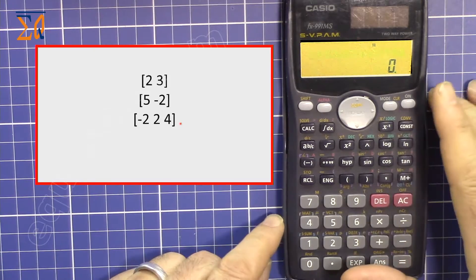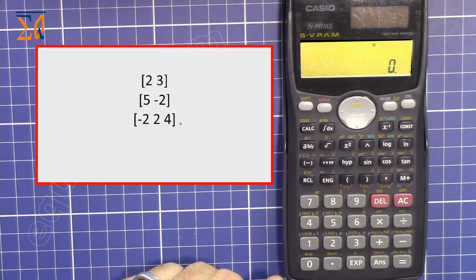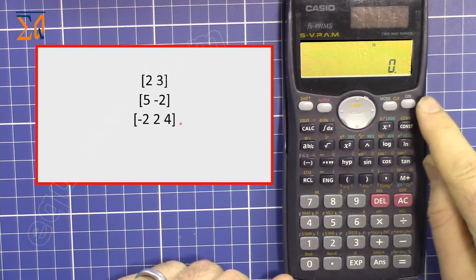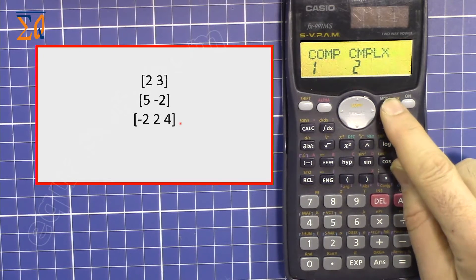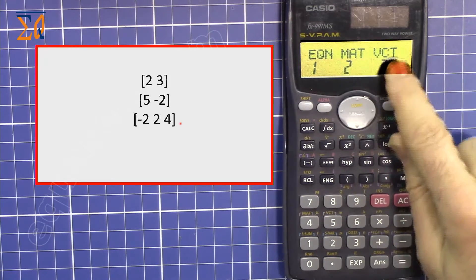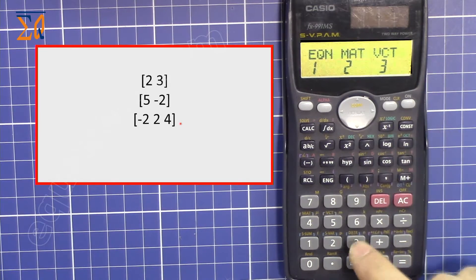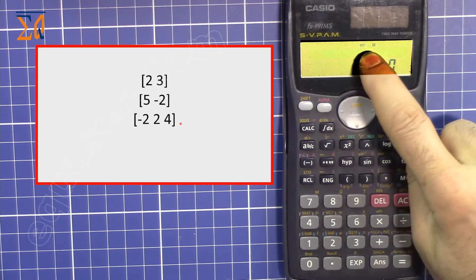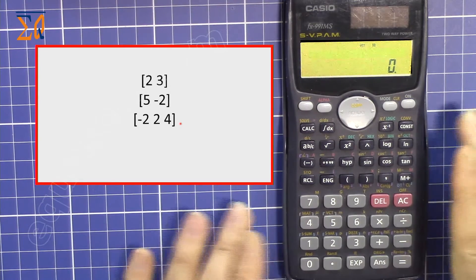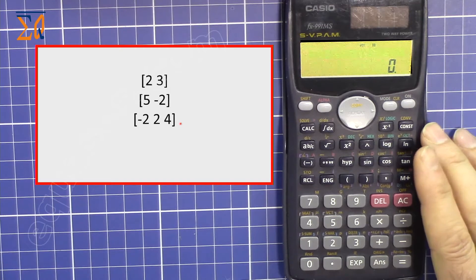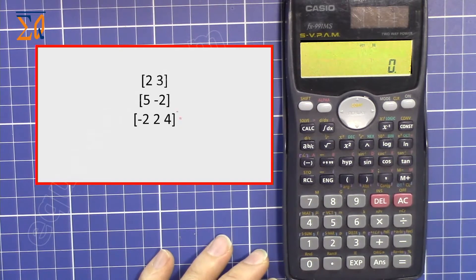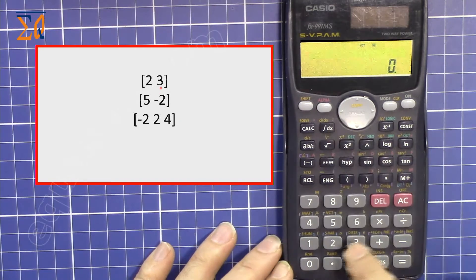This calculator can store up to three vectors. To start, press the MODE button multiple times — press it twice and then three times — until you see 'VCT', which stands for vector. Press 3 and on the screen you'll see VCT. The calculator is now ready to work with vectors.